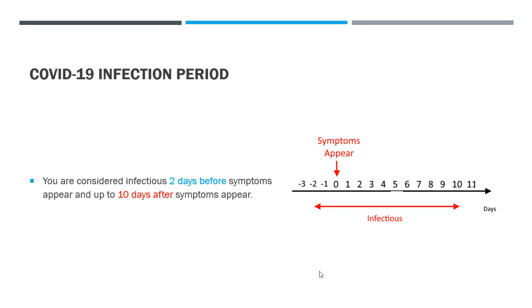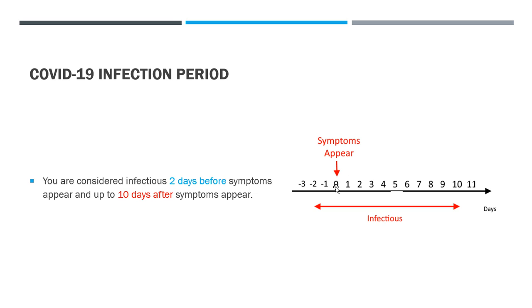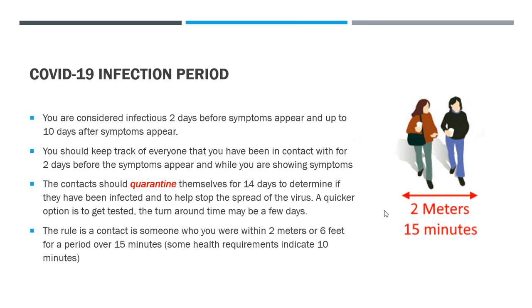Once you are infected, you are considered infectious two days before symptoms appear and up to ten days after symptoms appear. You are infectious with no symptoms two days before, and infectious up to ten days afterwards. The idea is that you isolate yourself as soon as symptoms appear so you don't infect other people. This way we can keep COVID-19 under control. You should keep track of everyone you have been in contact with for two days before symptoms appear and while you are showing symptoms.